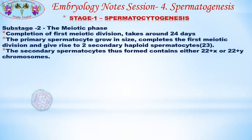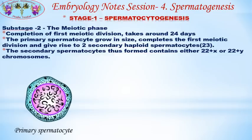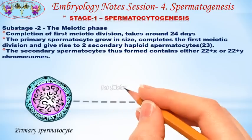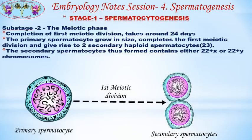Substage 2 is the meiotic phase, which takes around 24 days. Here the primary spermatocytes grow in size, complete the first meiotic division, and give rise to two secondary haploid spermatocytes. The secondary spermatocytes thus formed contain either 22 + X or 22 + Y chromosomes.